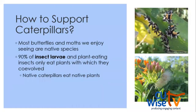Most of the butterflies and moths we enjoy seeing are native to Illinois, and 90 percent — 9 out of every 10 — insect larvae, which includes caterpillars, only eat the plants with which they co-evolved. That means native caterpillars for the most part prefer to eat native plants. That doesn't mean you won't find them munching on a non-native plant, but their overall preference is for native plants. So if we want to support caterpillars, we need to understand what plants they feed on.